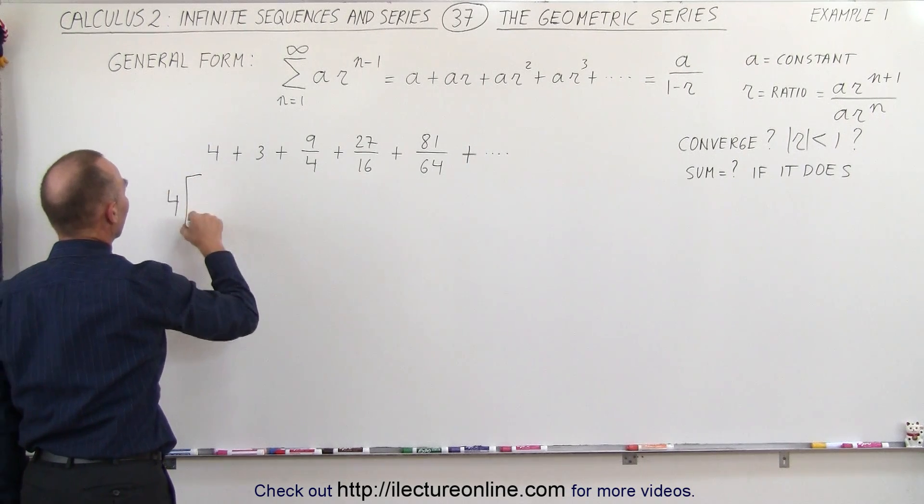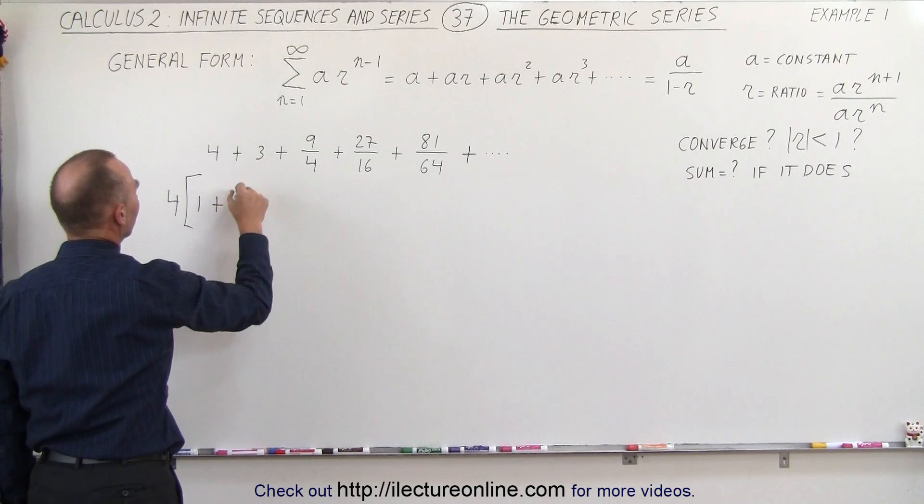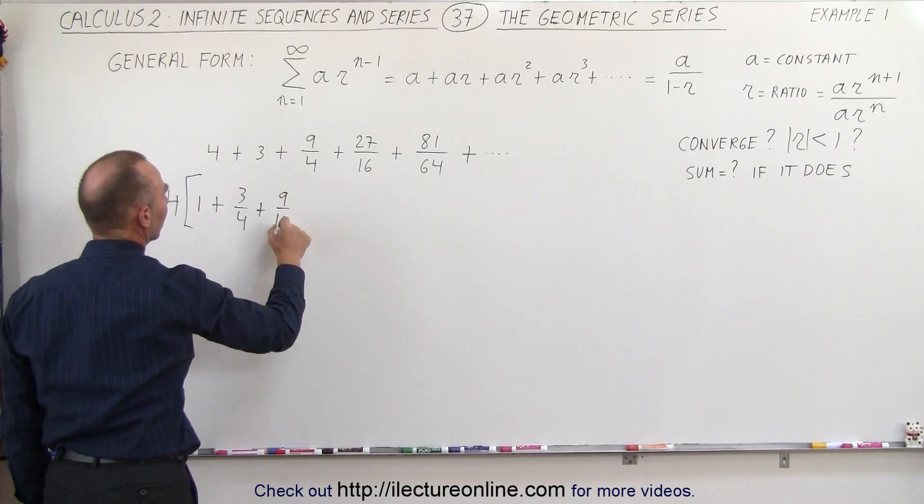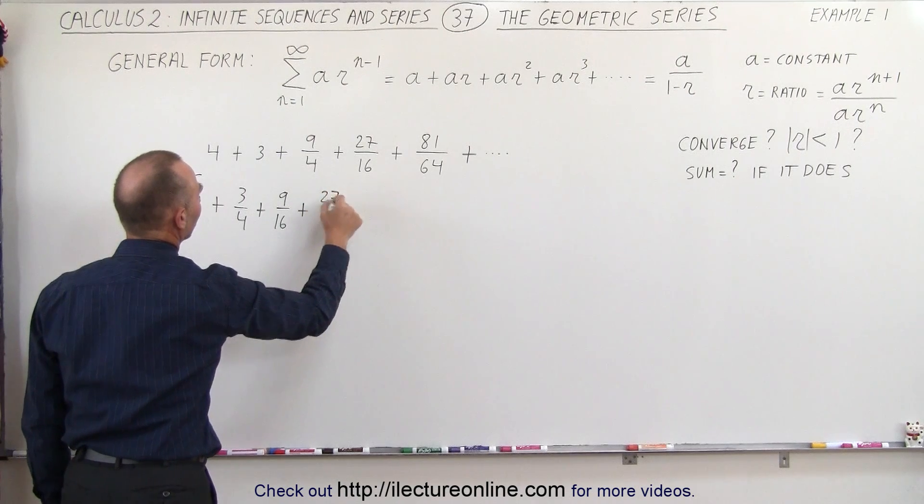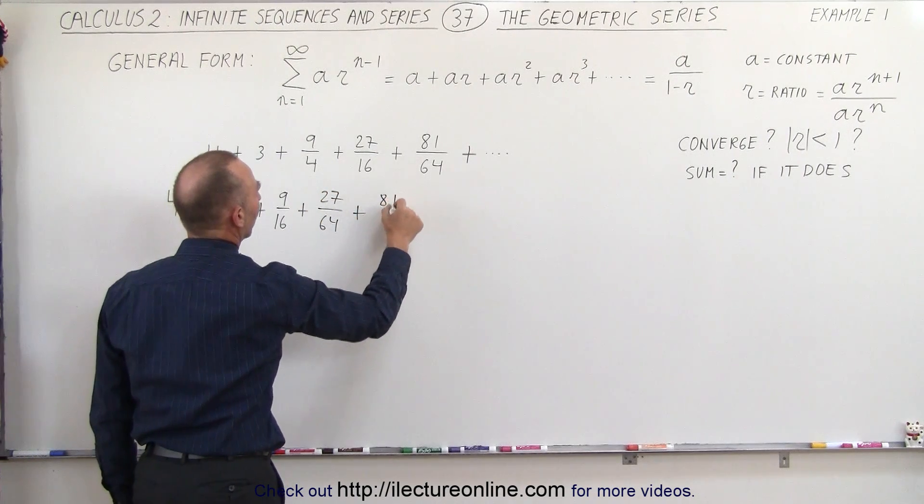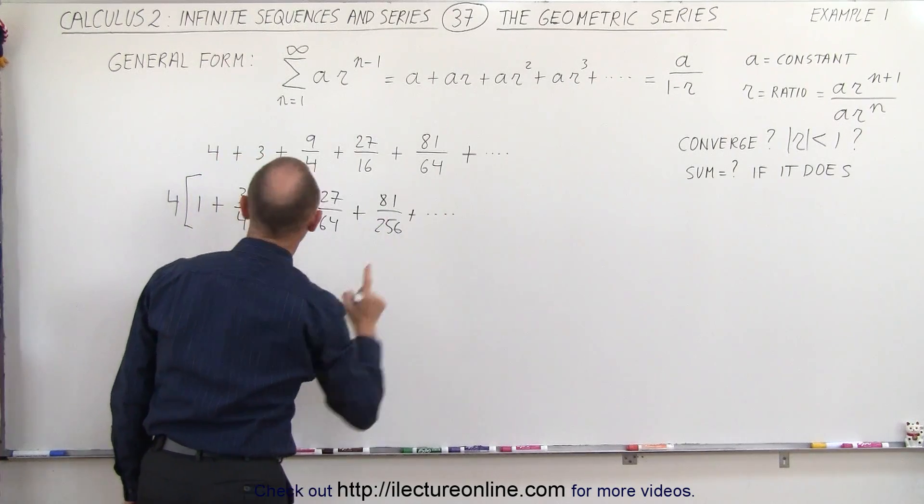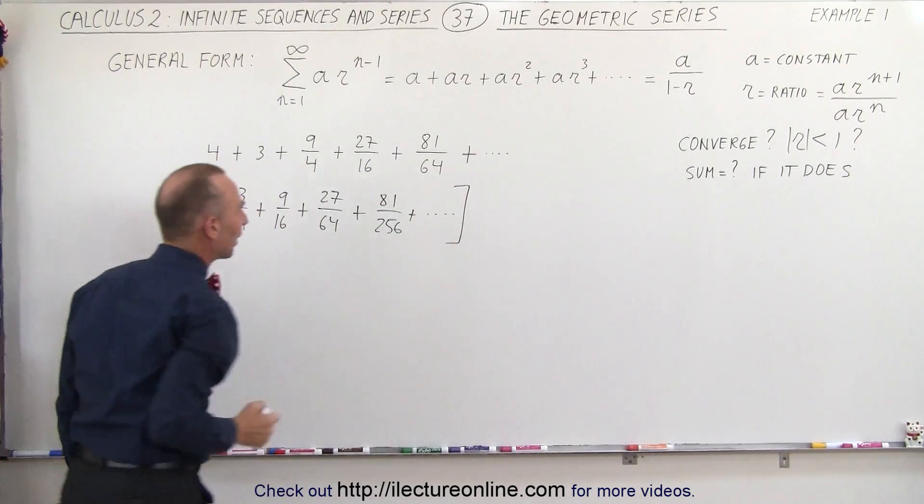So we have 4 times, this gives us 1 plus 3 over 4, plus 9 over 16, plus 27 over 64, plus 81 over 256, plus and so forth. So now we realize, of course I've got to put a bracket there.